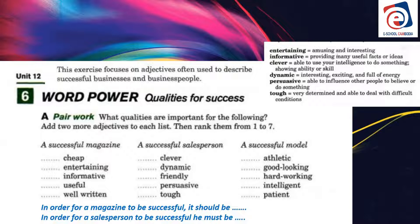Persuasive means able to influence and persuade people. You must be able to persuade them — 'persuade' is the verb, 'persuasive' is the adjective, 'persuasion' is the noun. You must also be tough. Tough means determined — very determined and able to deal with difficult conditions. It means you don't give up; you try again and again.